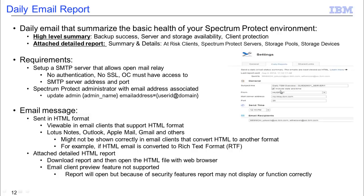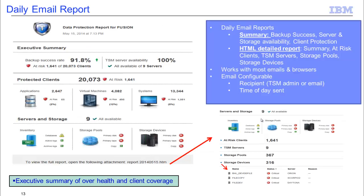Here you can see the setup screen where you specify the subject — you can give it any title you want — who the report came from, the mail server address and port, the time to send the report out, and the email recipients. These can be either Spectrum Protect administrators who have an email associated with their account, or they can be direct email addresses. Here's a view of the email report and the type of information you'll see if you click on the attachment.